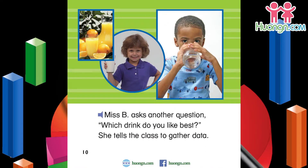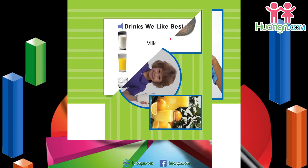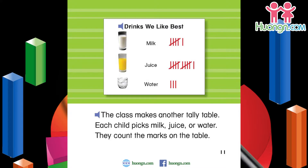Miss B asks another question: which drink do you like best? She tells the class to gather data. The class makes another tally table. Each child picks milk, juice, or water. They count the marks on the table. Drinks we like best — Milk: six. Juice: eleven. Water: three.